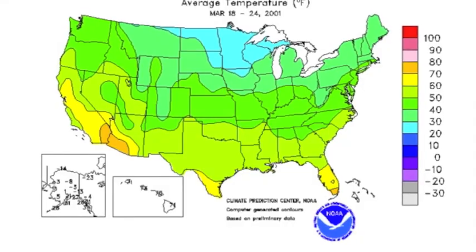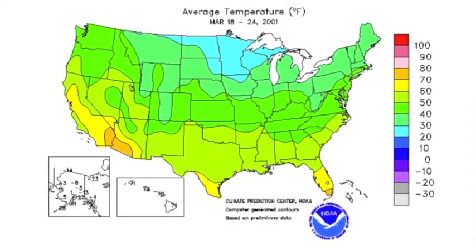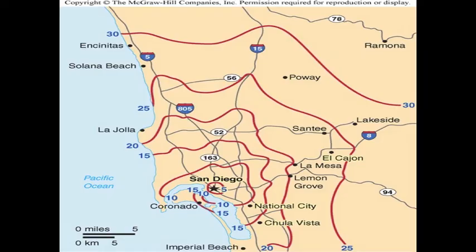Next we have isoline maps. An isoline map uses line symbols to show a continuous distribution, such as temperature, elevation, distance, or precipitation. The word isoline refers to lines that connect points of equal numeric value. Take this map, for example: this isoline map uses lines of equal travel time, which we call isochrones — iso for equal, chronos for time. If you look at San Diego, marked by a star, everything within the first isochrone can be reached within five minutes' time.